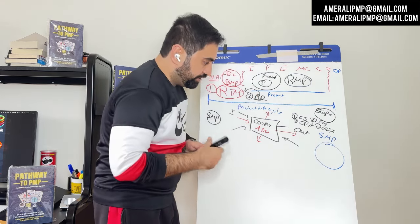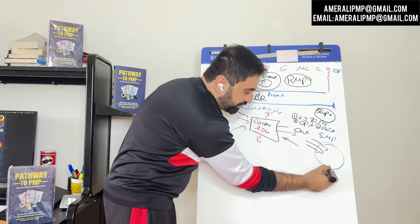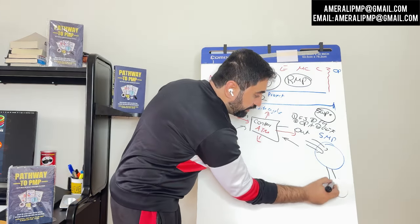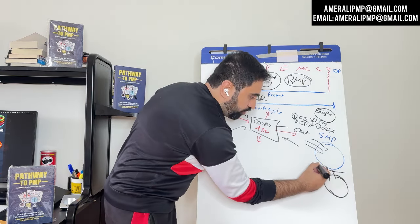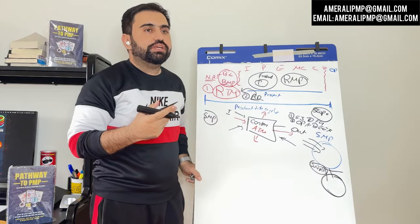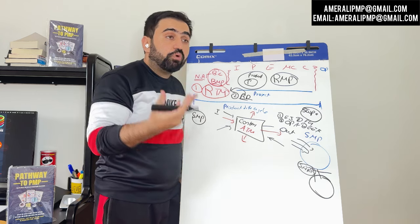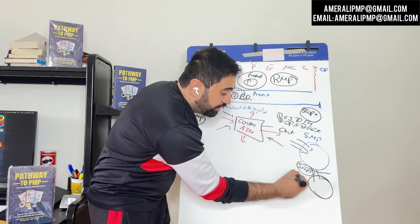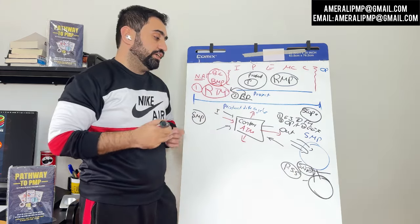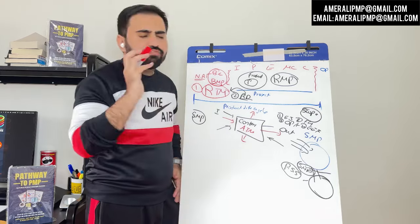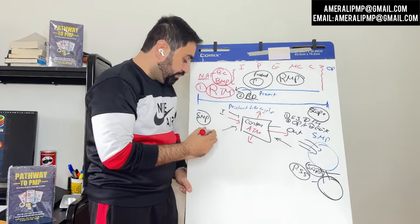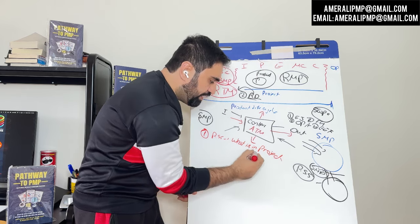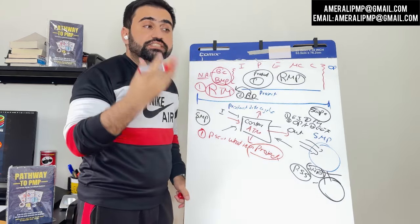Think of it like a funnel. All the requirements in the requirement documentation go into the funnel. We then apply a scope filter using the scope management plan — what is inside the scope, what is out of scope, what is included in the product and what is not, and priority systems like MoSCoW. You collect the requirements, apply the scope management plan filter, and out comes the Project Scope Statement — one of the most important things in the project. It contains everything that must be present in the project, and anything not included in it is not part of the project.